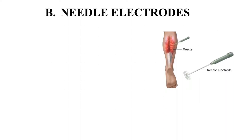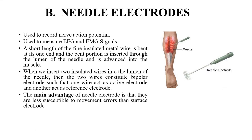Now we are going to see about needle electrodes. This image represents how a needle electrode can be inserted into the patient's muscle. Needle electrodes are used to record the peripheral nerve action potential, that is, electroneurography. These electrodes differ from other surface electrodes because we don't use electrolyte gel to maintain the interface between the extracellular fluid. They are used to measure EEG and EMG signals. A short length of fine insulated metal wire is bent at one end, and the bent portion is inserted through the lumen of the needle and advanced into the muscle of the patient.